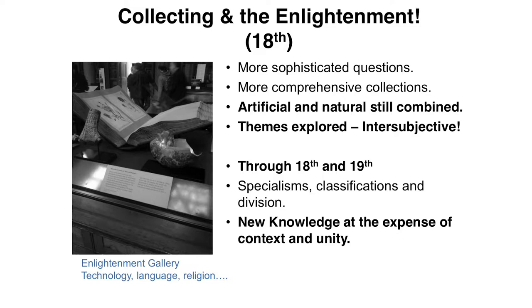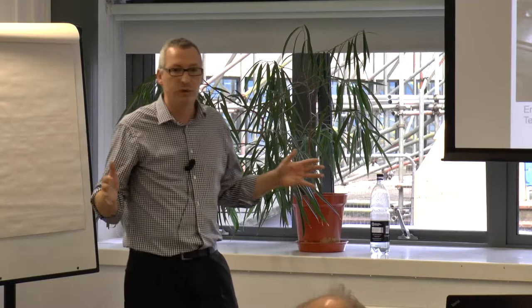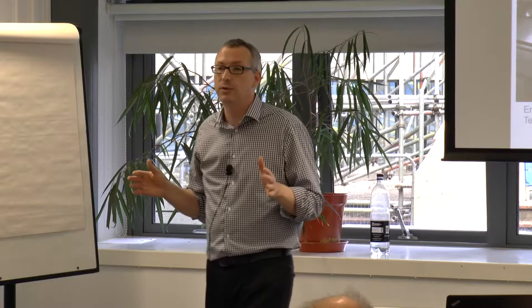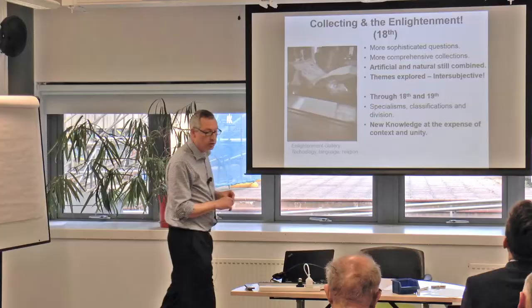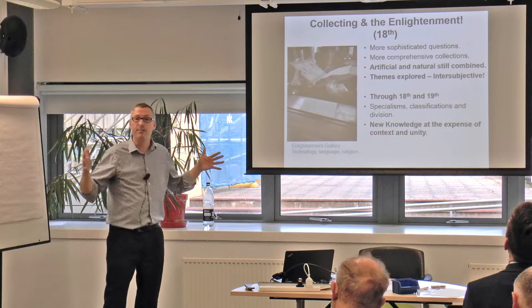When we go into the 18th century Enlightenment — and this is where the British Museum comes in — this is Hans Sloane's collection. These are very comprehensive collections of natural and artificial objects brought together, asking very big, intersubjective questions going across cultures and across periods. These collectors used trade routes and imperial expansion to put very comprehensive collections together.